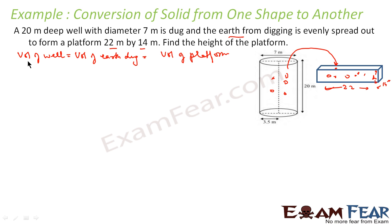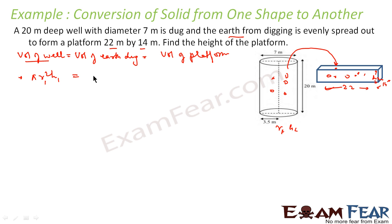So volume of the well is pi r squared h. Let's call the well radius r1 and height h1, and the platform height h2. So pi r1 squared h1 is the volume of the well, and the volume of the platform will be l × b × h2.